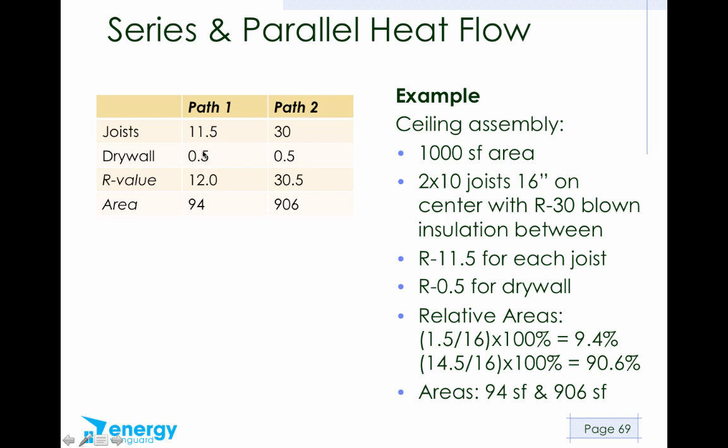That's the layers, the series heat flow. So the total R value is the sum of those, so it's 12.0. If it goes through the insulation, it encounters an R30 through the insulation, then 0.5 through the drywall. So the total would be 30.5. Here are our two areas. So these are the numbers that we need for the equation.